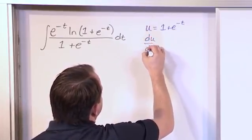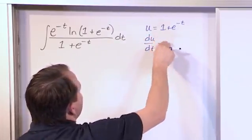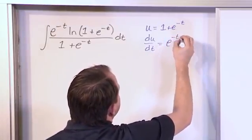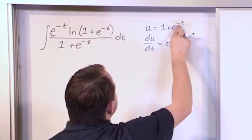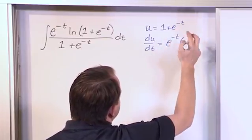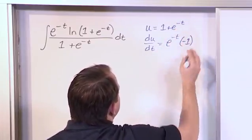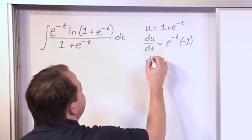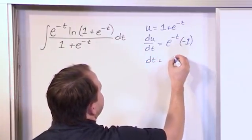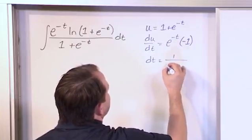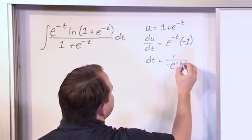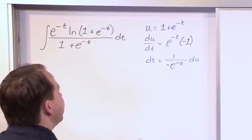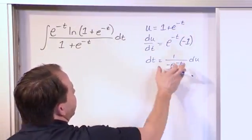So du/dt: the derivative of one is zero. The derivative of e to the minus t is e to the minus t, because it's indestructible, but then you have to take the derivative of the exponent, which is negative t, so you get negative one. Solving for dt, what you're going to get is one over negative e to the minus t, du. You just move the dt over, divide by all this stuff, and that's what you get.